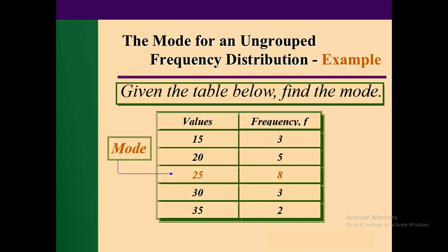اب ہمارے پاس اگر frequency table ہو تو یہ بھی بڑے آسان ہے۔ ویلیوز ہیں: پندرہ، بیس، پچیس، تیس، پینتیس۔ پندرہ 3 دفعہ آئی، 20 پانچ ٹائم، 25 آٹھ ٹائم، 30 تین ٹائم، اور 35 دو ٹائم۔ You can tell in just a fraction of a second — 25 is the mode because it occurs most often, 8 مرتبہ۔ باقی کوئی تین ہے، کوئی پانچ، کوئی دو — تو اس data میں 25 mode ہو جائے گا۔